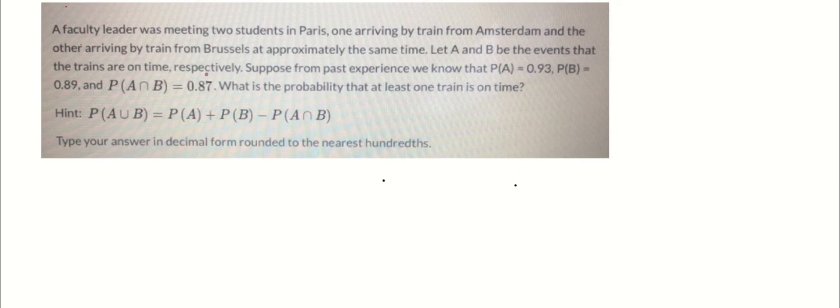Suppose that from past events we know that the probability of A is equal to 0.93 and the probability of B is equal to 0.89, and the probability of A intersect B is equal to 0.87.